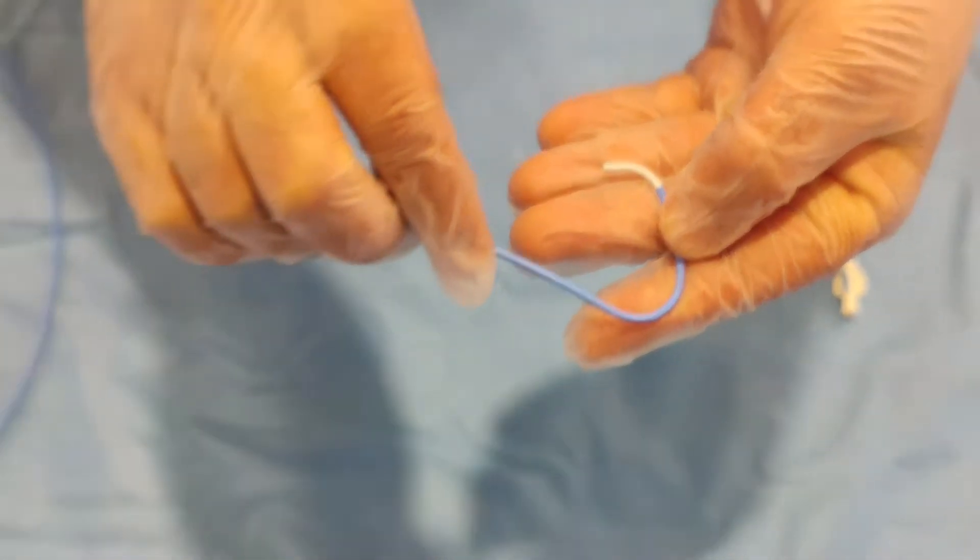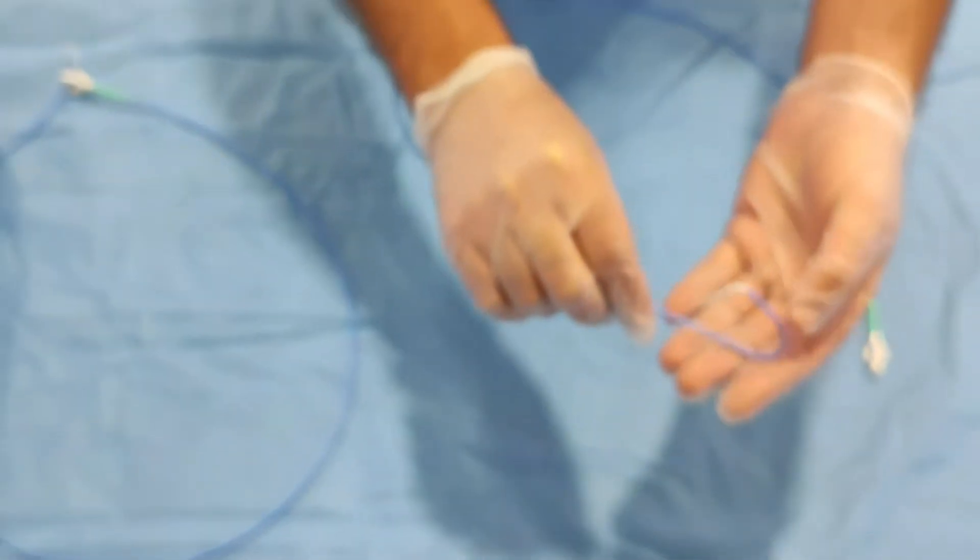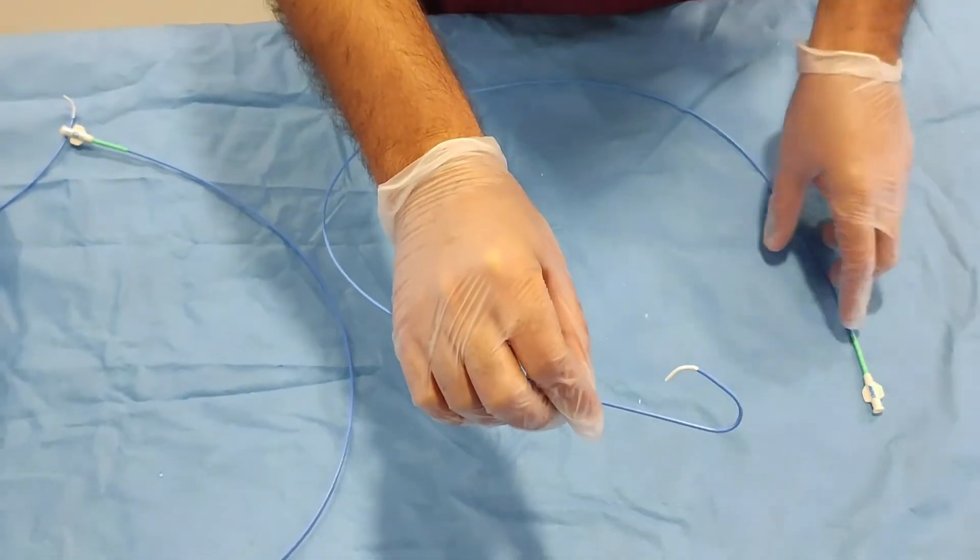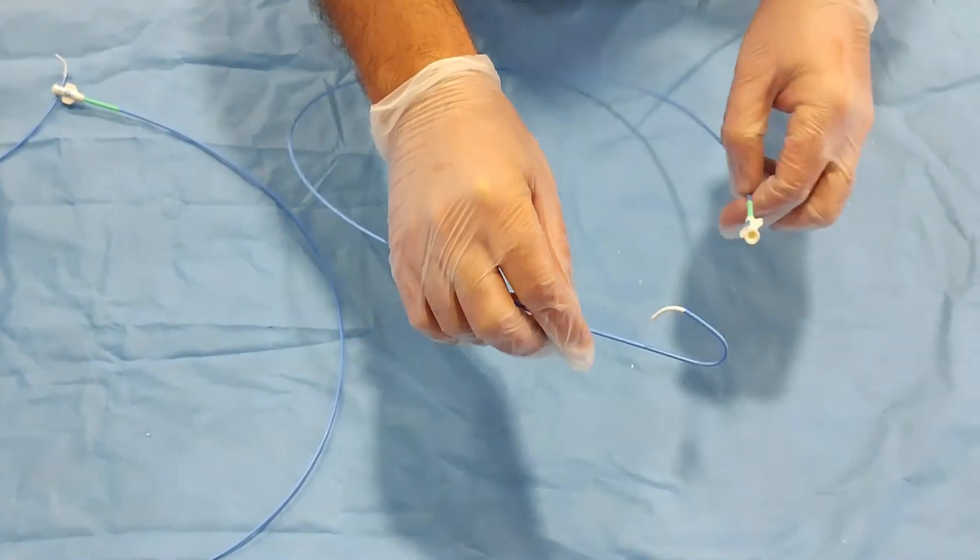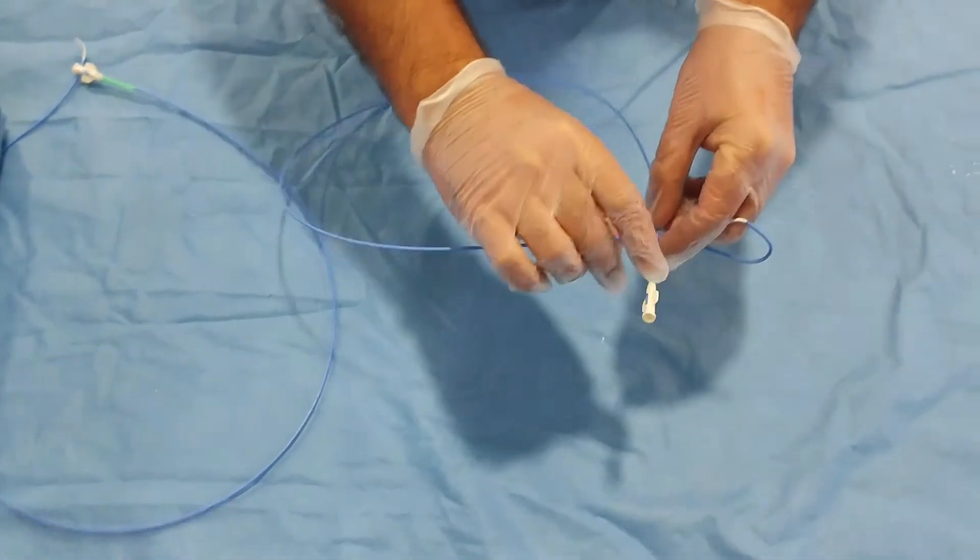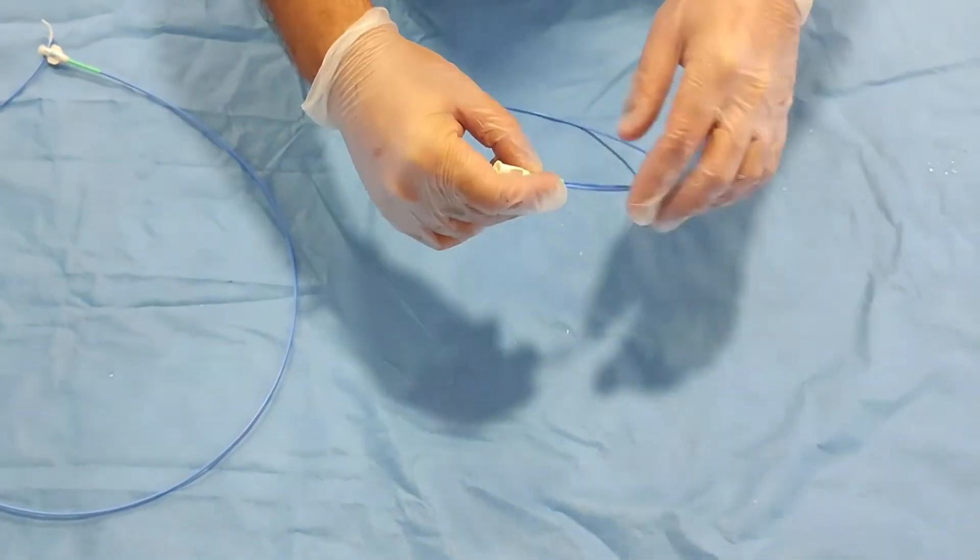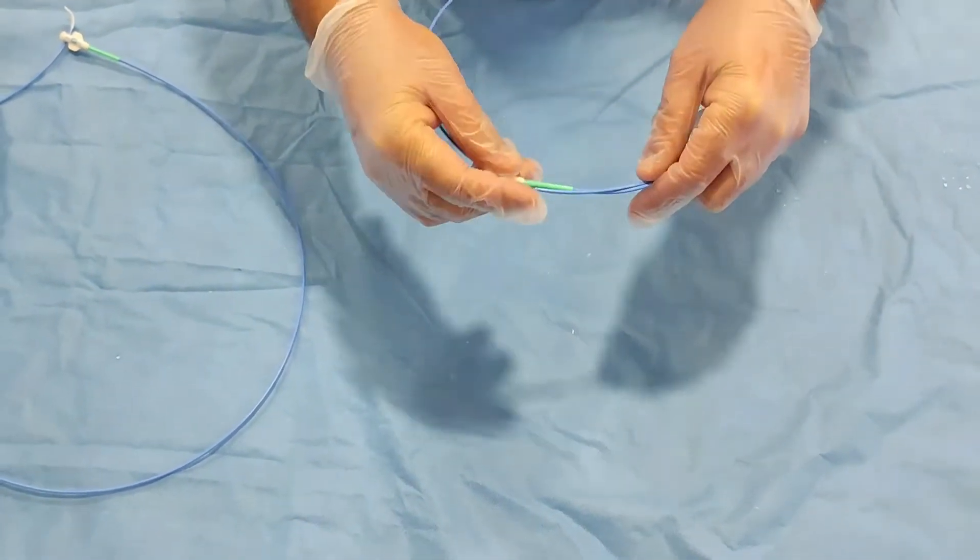This is also a diagnostic catheter which is used for diagnostic angiogram. After the Seldinger technique, when we insert the sheath, you then insert the wire with the catheter.